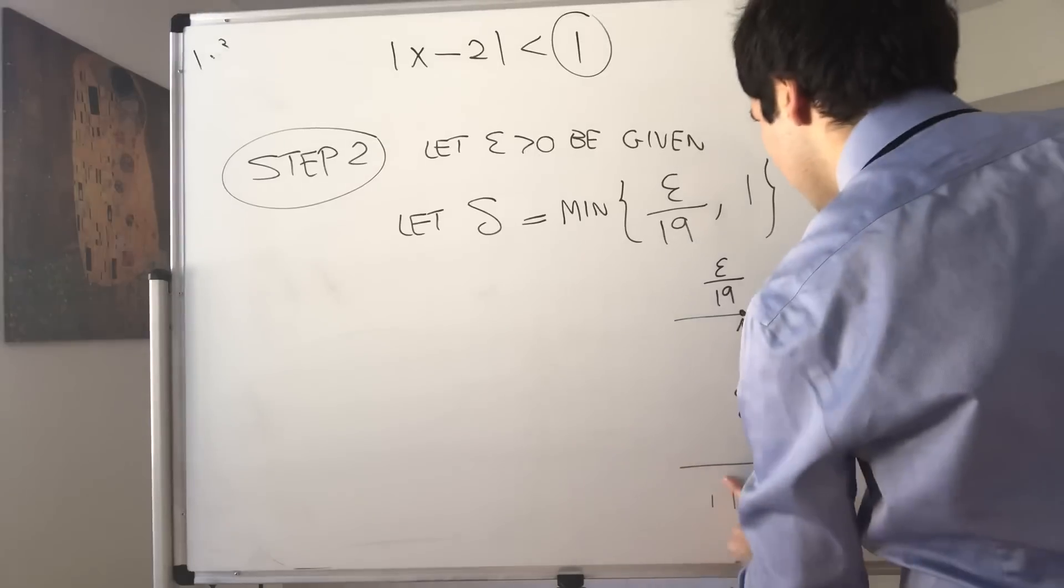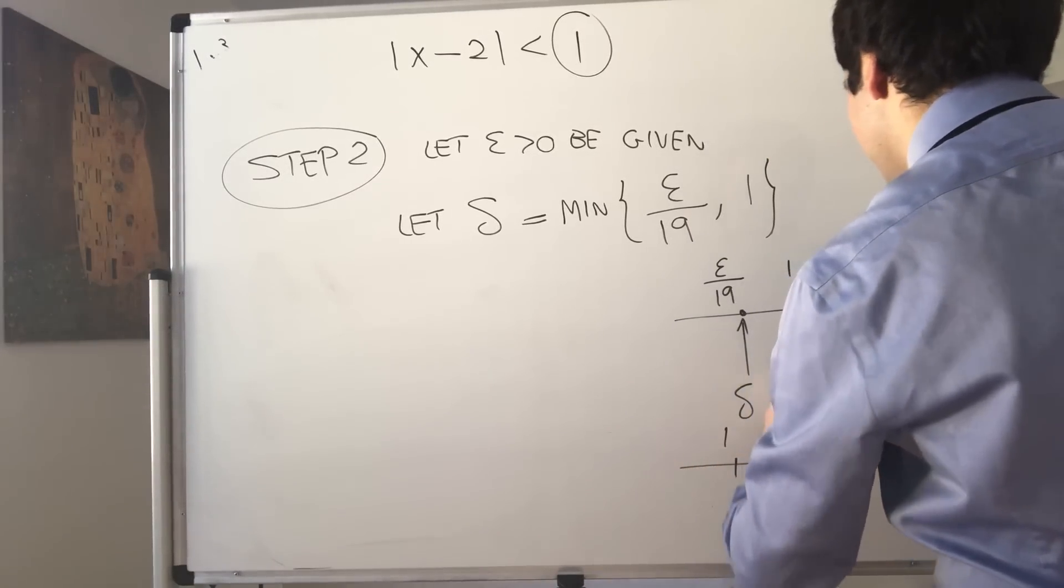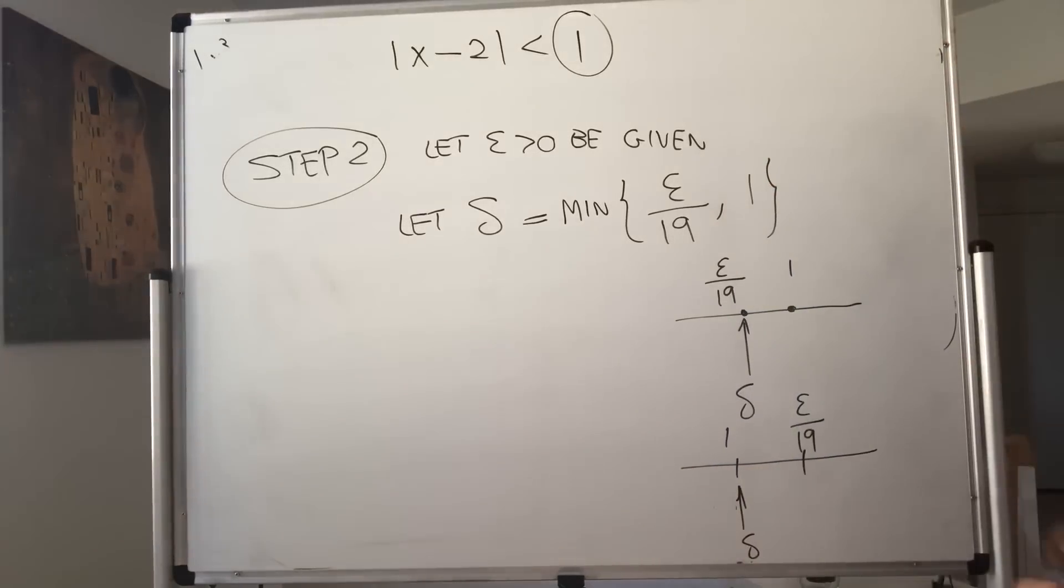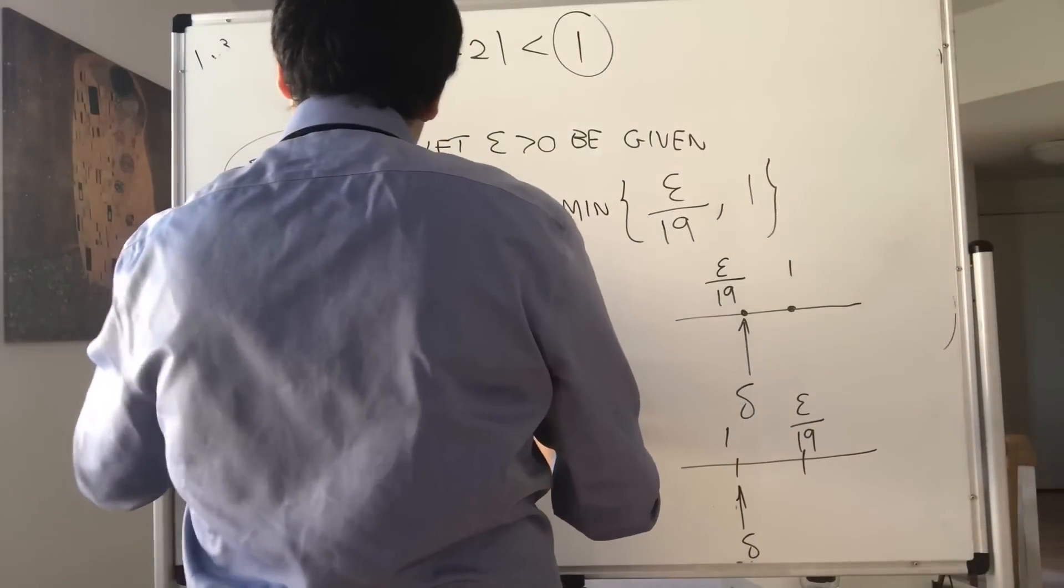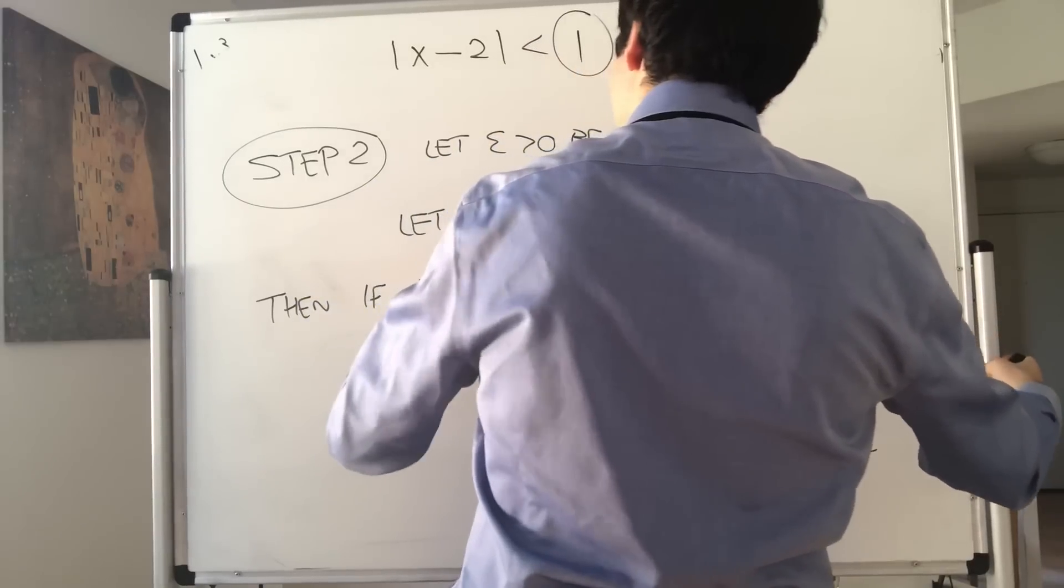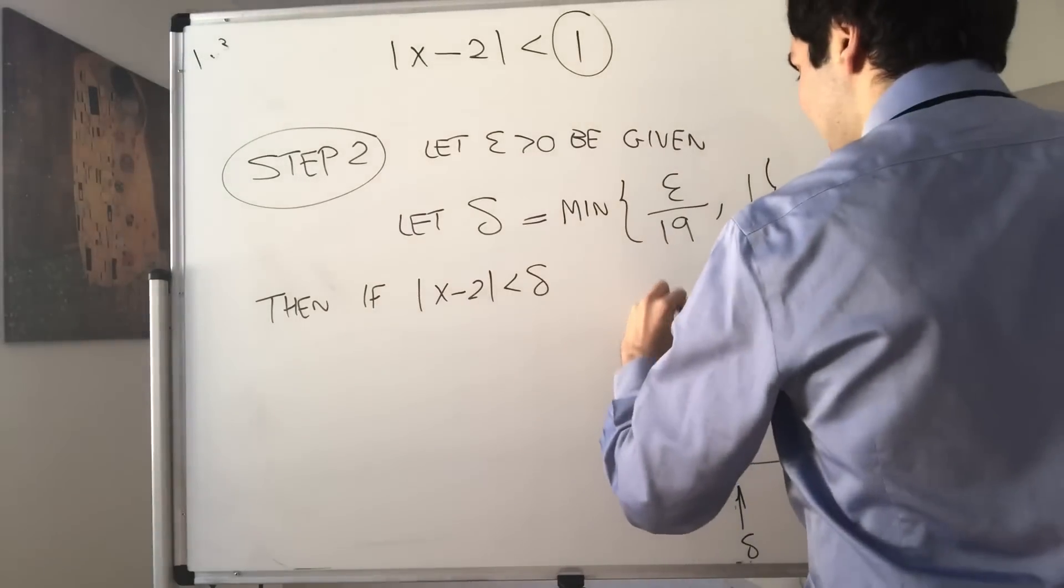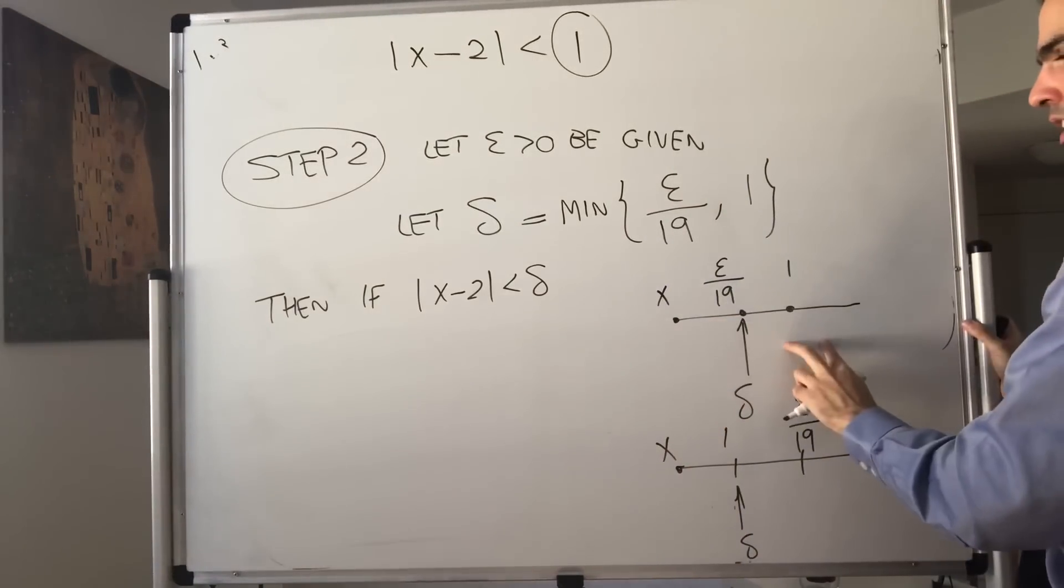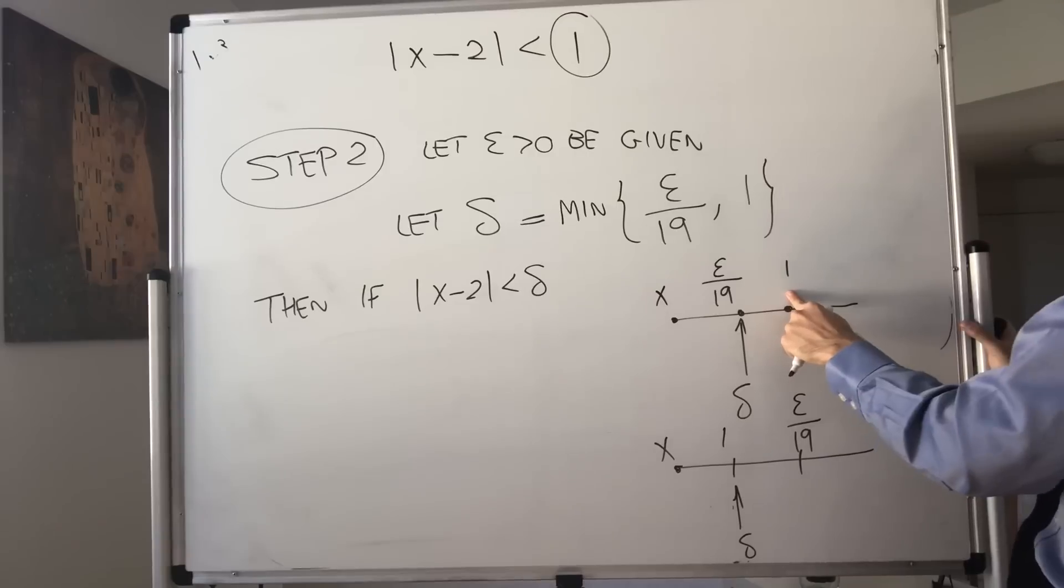But if this is 1, suppose for some reason epsilon is big and this is epsilon over 19, then this is delta. Just the smaller one of the two. If absolute value of x minus 2 is less than delta, what do we get? If x is less than the minimum, then it's both less than epsilon over 19 and less than 1.